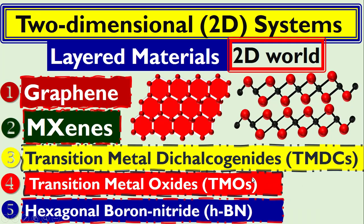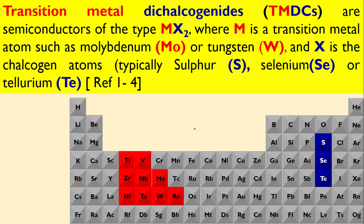Now this is a periodic table. Looking at the MX₂ formula, a transition metal dichalcogenide is a semiconductor. The M represents transition metals such as niobium, molybdenum, tungsten, and zirconium. The X represents chalcogen atoms such as sulfur, selenium, and tellurium. When we combine these chalcogen atoms with a transition metal in this formula, we get this material.